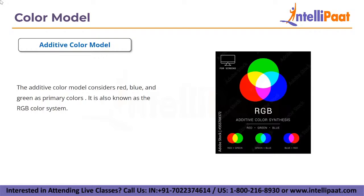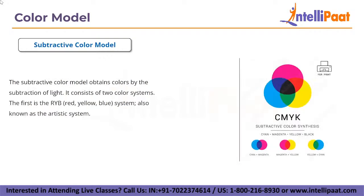Remember that the more light you add, the brighter and lighter the color becomes. Results obtained by mixing additive colors are often counterintuitive for people accustomed to the subtractive color system of paints, dyes, inks, and other tangible objects. The subtractive color model obtains color by the subtraction of light and consists of two color systems — the first is RYB: red, yellow, and blue, also known as the artistic system.